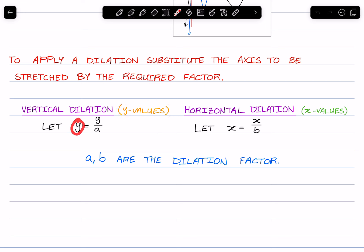So we are substituting y for y over a. And for a horizontal dilation, which are x values, we are substituting x for x over b, where a and b are the dilation factor.